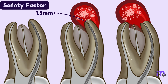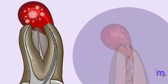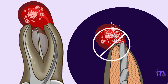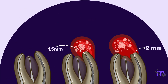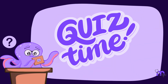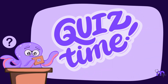In cases where apical root resorption is observed, an apical stop should be created short of the radiographic apex so that over-instrumentation and overfilling can be avoided. To achieve this, the working length is kept 2 millimeters short of the radiographic apex. These modifications were given by Wine and hence it's called Wine's modification.